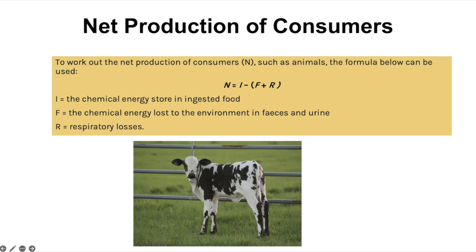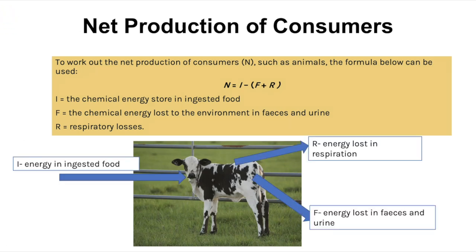Another formula you need to be aware of is the net production of consumers. To work this out, represented by the letter N, for organisms such as animals you'd use the formula: N = I − F − R, where N is the net production of the consumers, I is the chemical energy store in ingested food, F is the chemical energy lost to the environment in faeces and urine, and R are the respiratory losses. This has come up as a multiple choice question, so it's a good one to learn — maybe put it on a flashcard. Visually we're looking at the amount of energy going in minus the energy losses from respiration and from faeces and urine.